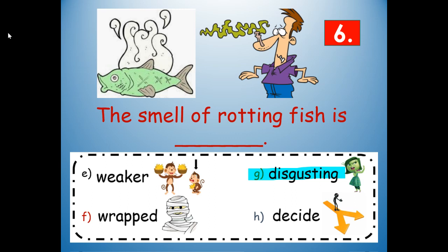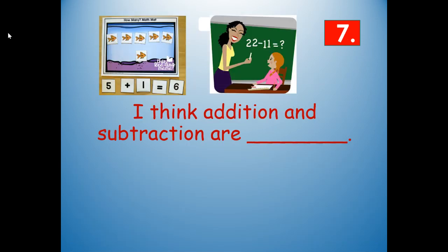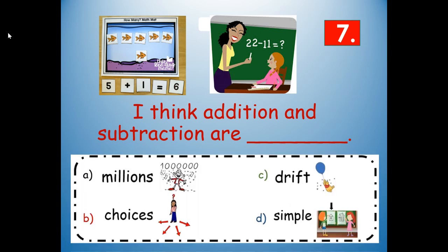Disgusting. The root word is disgust with -ing. Disgusting. The smell of rotting fish is disgusting — or gross. Number seven: I think addition and subtraction are blank. Would it be millions, choices, drift, or simple? What makes sense given our picture clues and where the word is in the sentence? Simple — S-I-M-P-L-E. I think addition and subtraction are simple, or easy.